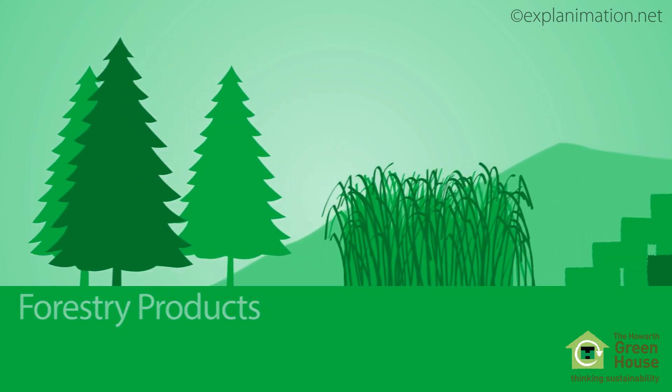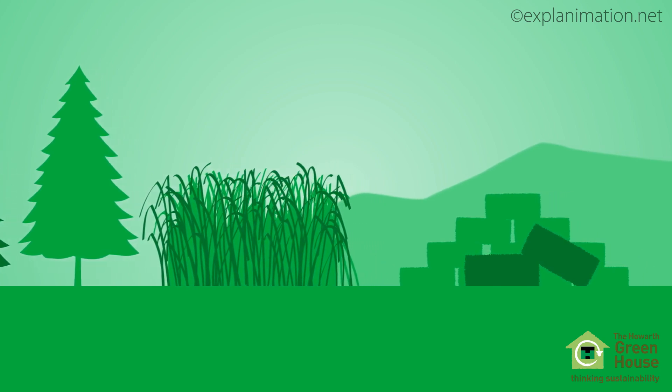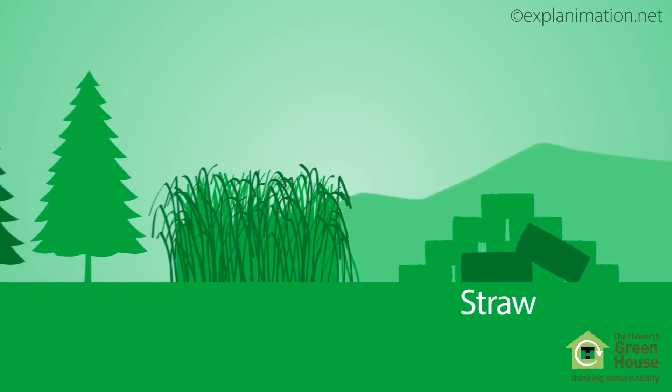Examples include forestry products, energy crops like miscanthus, also known as elephant grass, and agricultural byproducts like straw.